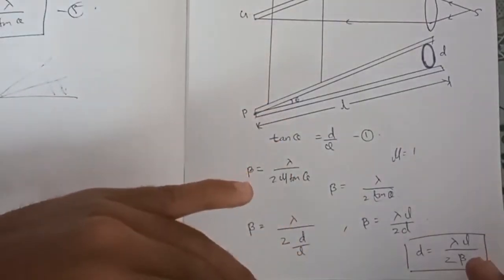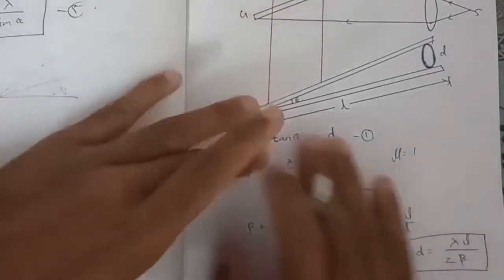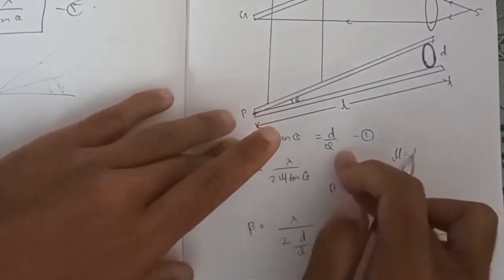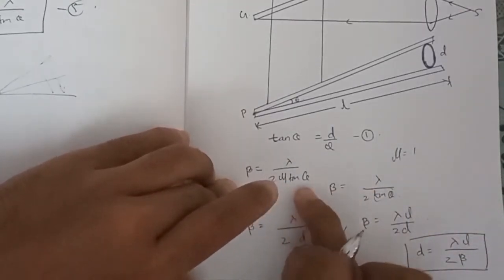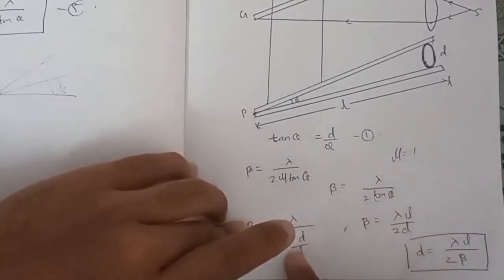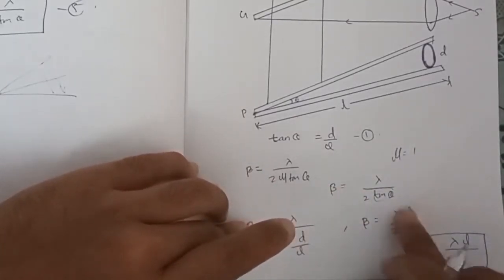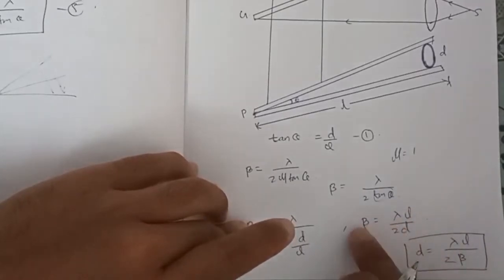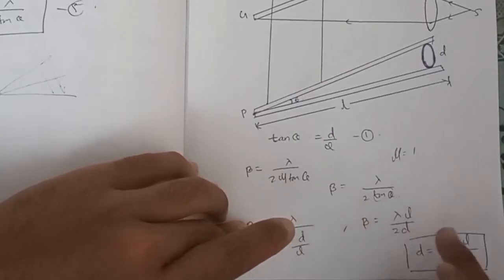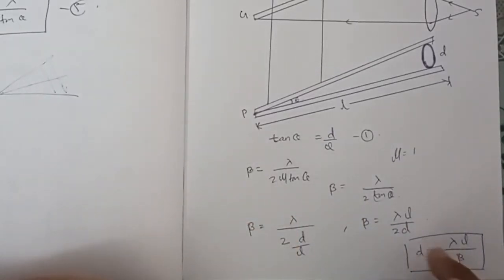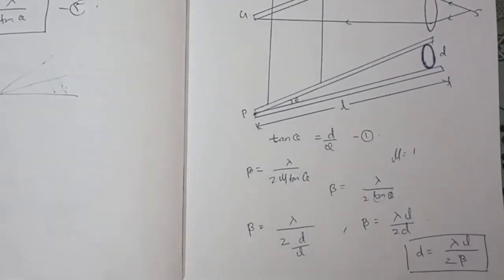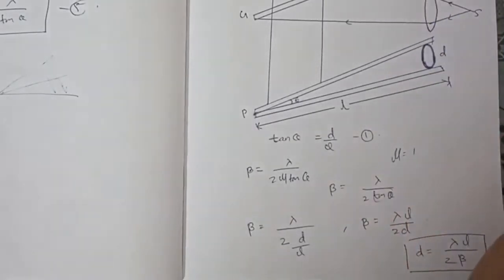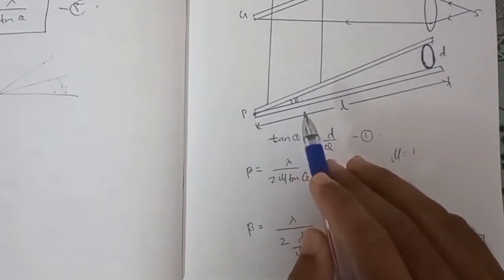So the diameter of the wire is D equals lambda L by 2 beta. Now I am going to show you how to use this equation with one particular dark band reading.